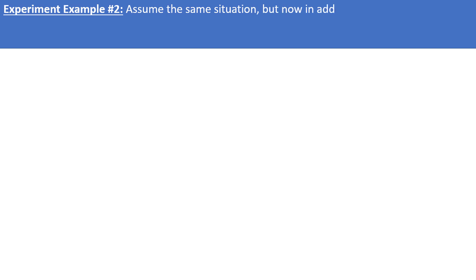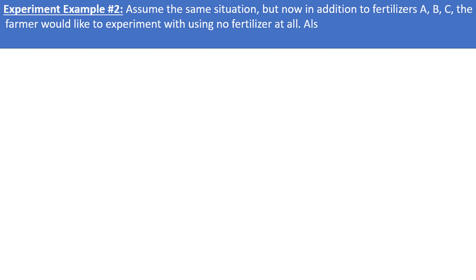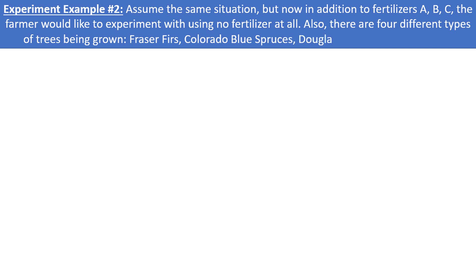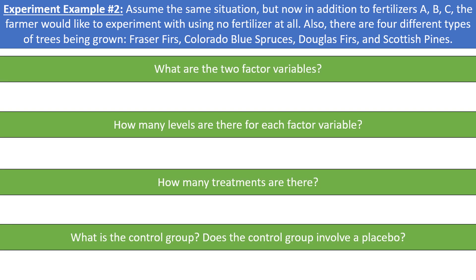Let's look at one more example. Assume the same situation, but now in addition to fertilizer A, B, and C, the farmer would also like to experiment with using no fertilizer at all. Also, there are four different types of trees being grown: Fraser firs, Colorado blue spruces, Douglas firs, and Scottish pines. Take a moment to pause the video and see if you can identify the two factor variables, the number of levels, and the number of treatment combinations.